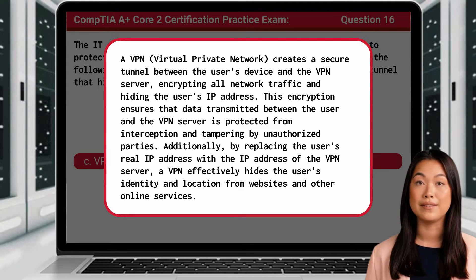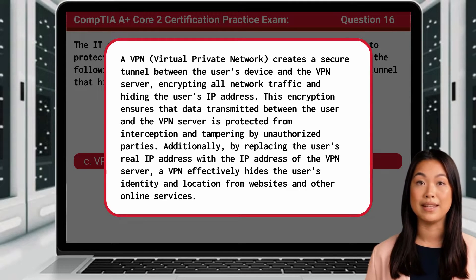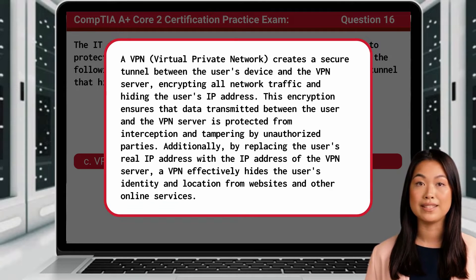Additionally, by replacing the user's real IP address with the IP address of the VPN server, a VPN effectively hides the user's identity and location from websites and other online services.